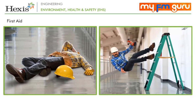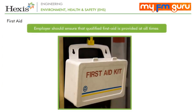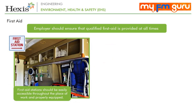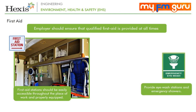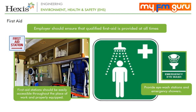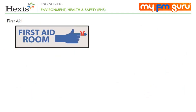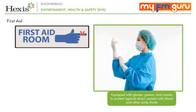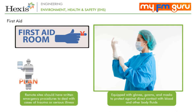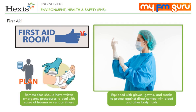Accidents can happen anywhere and anytime, so first aid provides immediate and temporary treatment to victims. The employer should ensure that qualified first aid is provided at all times. First aid stations should be easily accessible throughout the place of work and properly equipped, including eye wash stations and emergency showers located close to all work stations. Depending on the nature of work, dedicated first aid rooms should be provided with gloves, gowns and masks. Remote sites should have written emergency procedures to deal with cases of trauma or serious illness.